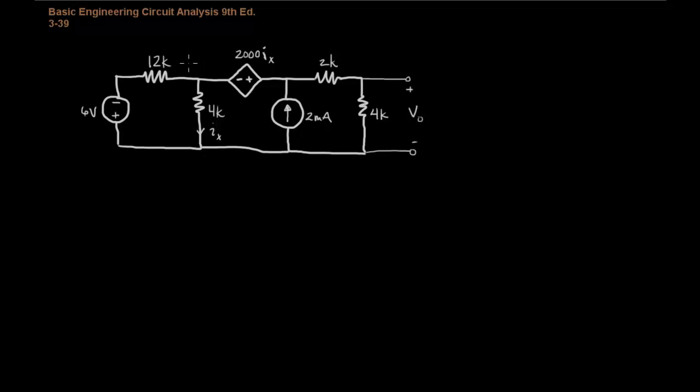The thing that is different about this circuit from some of the other examples is that we have a current controlled voltage source. And so we're going to have to do a little bit extra algebra to figure out how this works in our circuit.